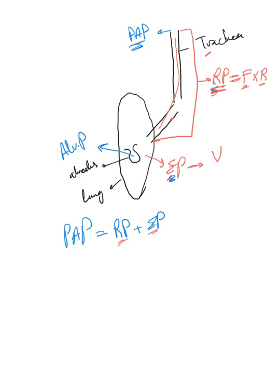The elastic pressure, as we explained, is basically the volume that gets into the lung divided by its compliance. Let's go back and go over compliance - how easy to stretch the lung out and how do we calculate it.